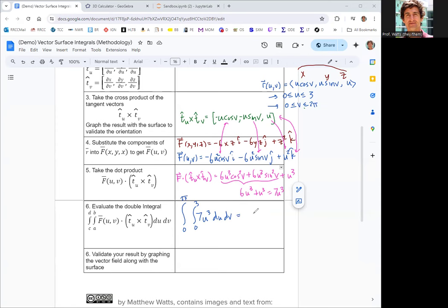Integrating with respect to u, the antiderivative of 7u cubed is 7 over 4 u to the fourth. Evaluating at 3, you get 7 fourths times 3 to the fourth. 3 to the fourth is 81. 81 times 7 is 567. And then you still need to integrate that with respect to v from 0 to 2 pi. That's just going to give you 567 over 4 times 2 pi, which is 567 pi over 2. That should be our result.